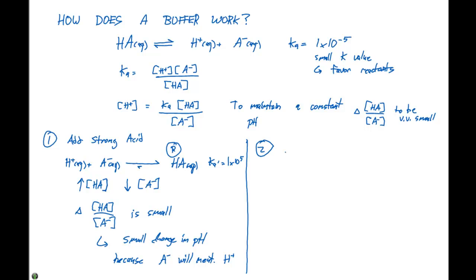What about adding a strong base? Because we need our buffer to not only resist changes due to adding a strong acid, we need it to resist changes upon adding a strong base. So here if we have OH⁻, if we add that to HA,